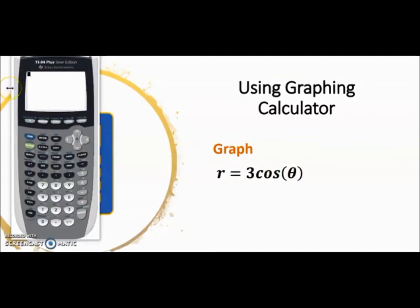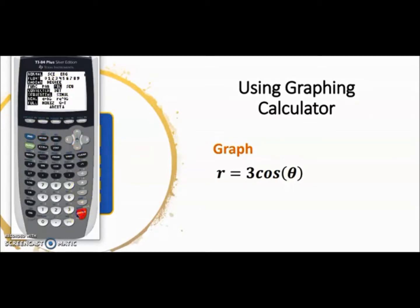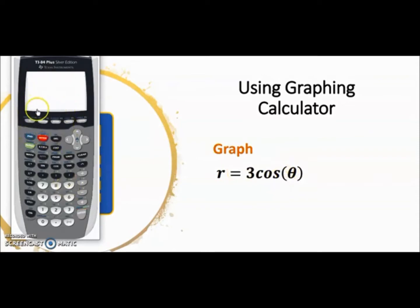We're going to use our graphing calculator to graph some of these different types of polar equations. The first thing you have to do on your TI is go to Mode, then go down and make sure it's set to Polar — that P-O-L is polar. Depending on what you need, you could have it in radians or degrees; we're going to keep it in radians since we have θ. Press Second Quit to exit out of Mode.